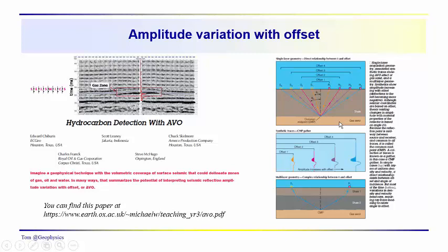To say it's a gas sand, it could only have a few percent, three, four, five percent gas saturation, which would produce a significant decrease in the amplitude of the reflection from the top. This is the negative amplitude of the reflection from the top and the positive reflection would be from the base, not shown in this diagram.